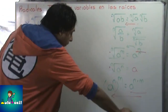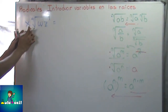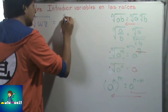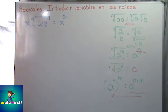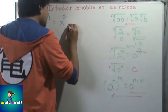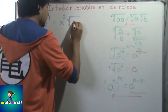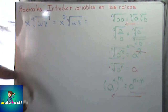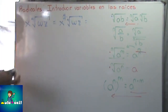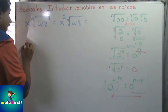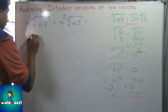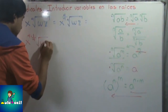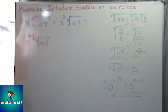Empezamos: esa variable la vamos a elevar al índice de la raíz — X a la 4 sobre 4, que nos da 1 — y escribimos la raíz cuarta de WZ. Esto es igual. Ahora en esta fracción vamos a factorizar el numerador: X quedaría 4 por un cuarto. Y la otra raíz: raíz cuarta de WZ. Ya estamos aquí con una variable que tiene los exponentes multiplicándose.